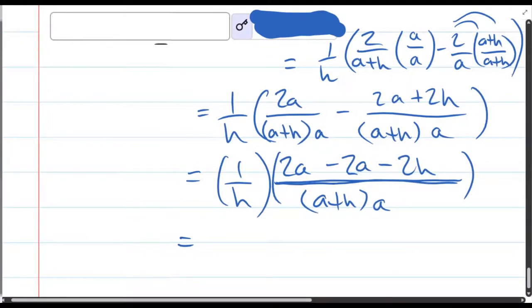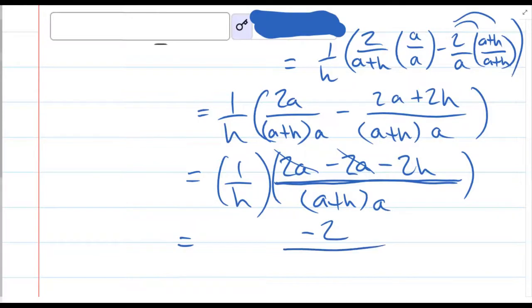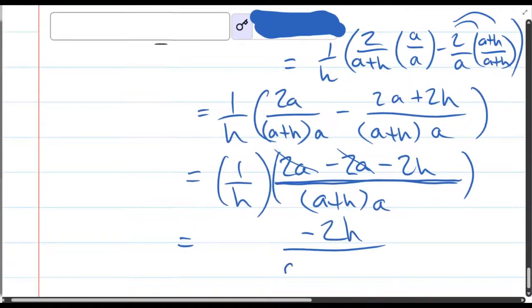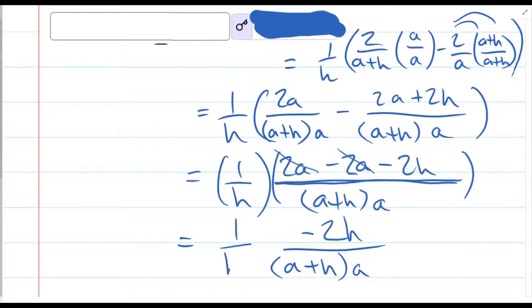But two a minus two a is zero a. Those cancel. We're just left with negative two h. If there was still an a hanging around here, you could cancel with the denominator a, but there is no longer that a hanging around.